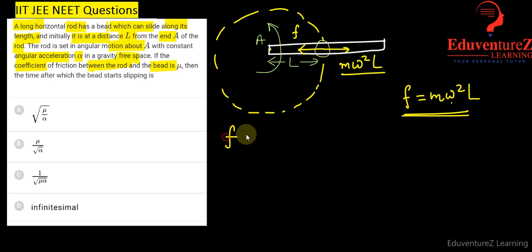We know that friction is equal to mu times N, where N is the normal force. Normal force is acting perpendicular and equals mass into tangential acceleration, and tangential acceleration is equal to alpha R, where R is radius which is length L.